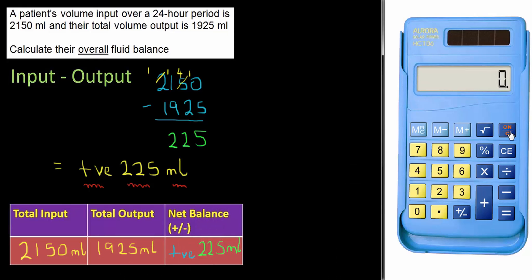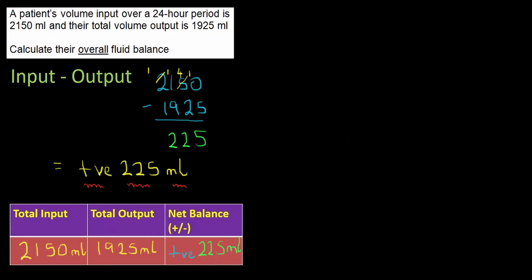Let's now check all this with the calculator. Clear the memory. My input was 2,150. I'm just reading it off my table. Take away output 1,925. And the answer is indeed 225 millilitres. That confirms the answer. One final question.